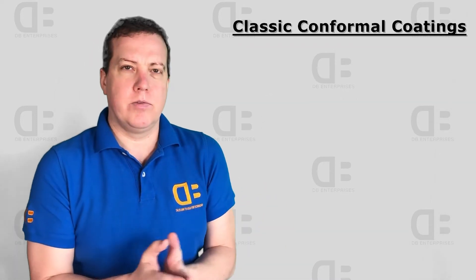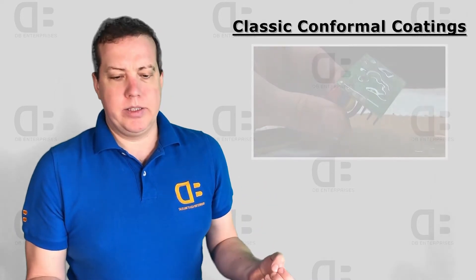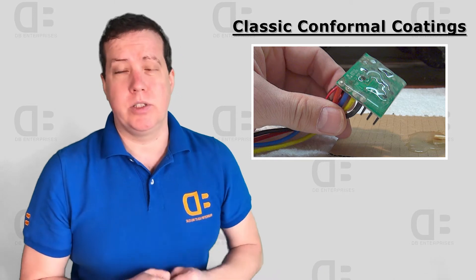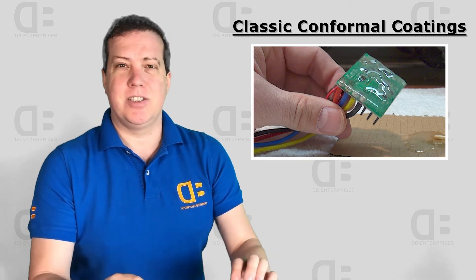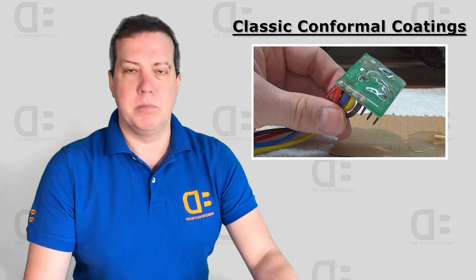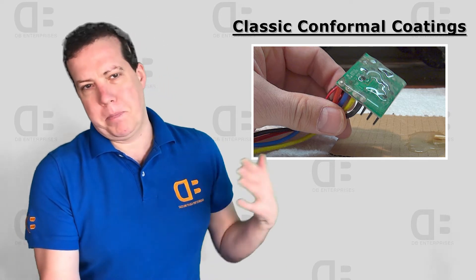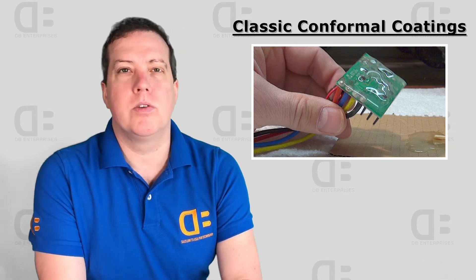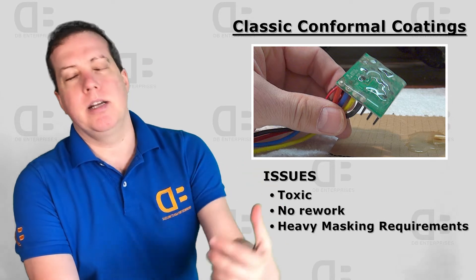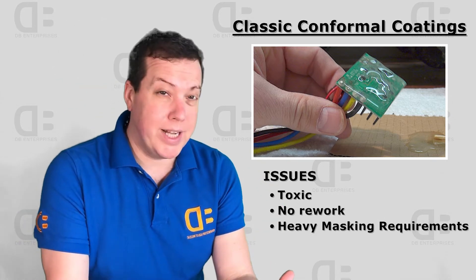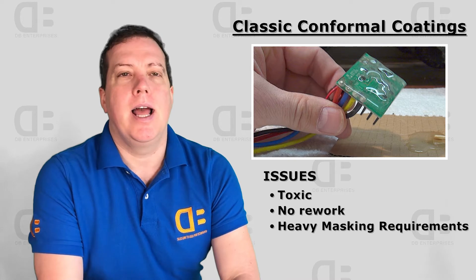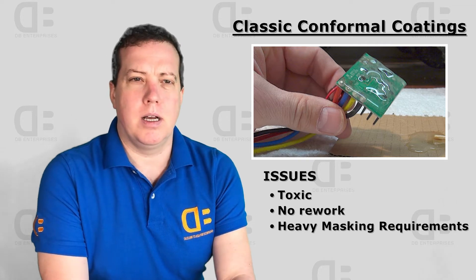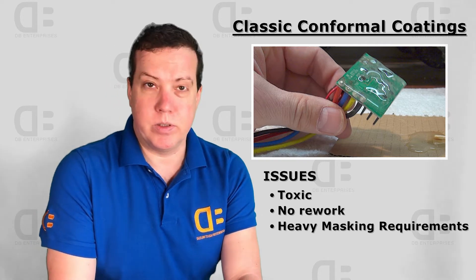Secondly, there's classic conformal coatings. If anybody's worked in white goods, you've seen potting of glue or automotive potting of electronics, where they basically take the electronics and just dip it in a glue and it becomes this brick of protection. There's other sprays or epoxies that go over things to protect them. Issues with this: it's a toxic process, not very well welcomed by brands and factories nowadays. And secondly, you can't rework it once it's inserted in there. There's no more rework of the electronics if there's a problem with it later.